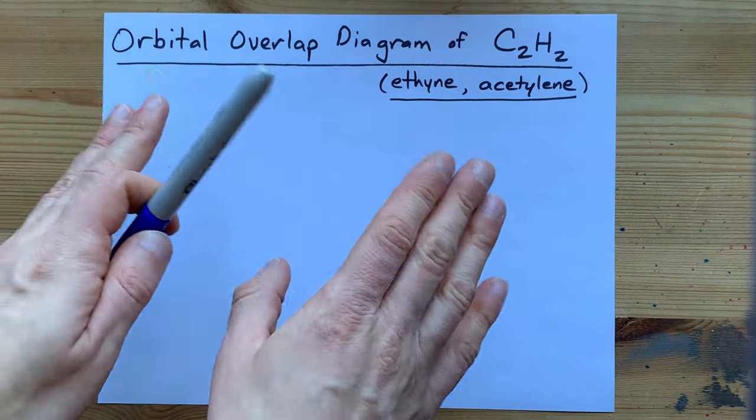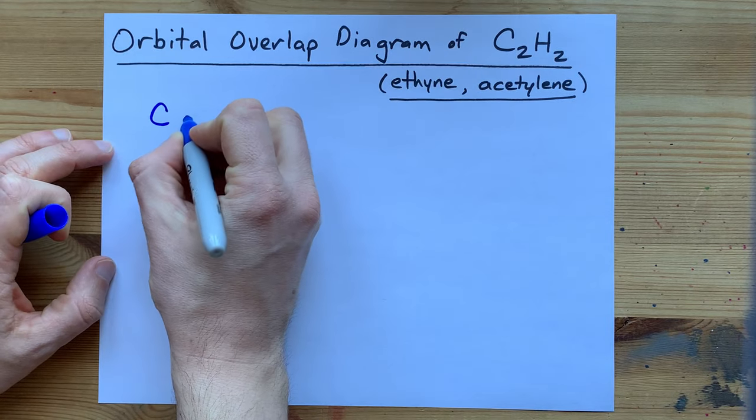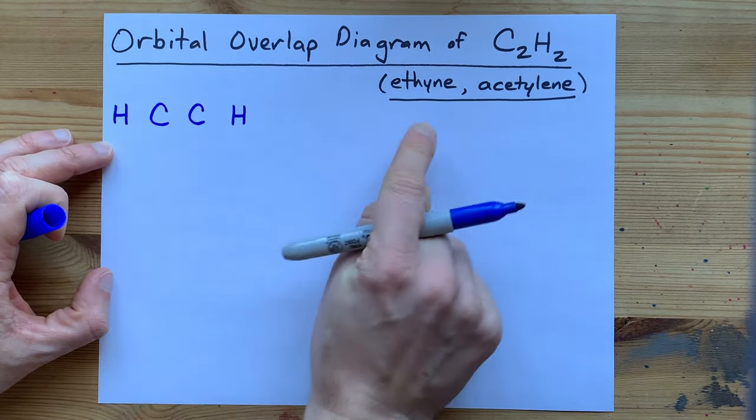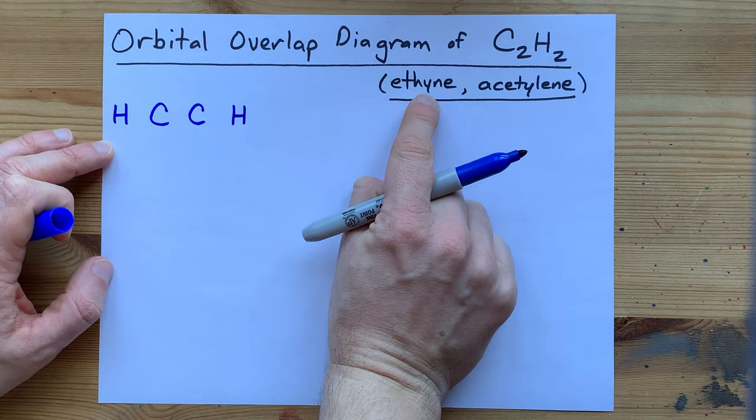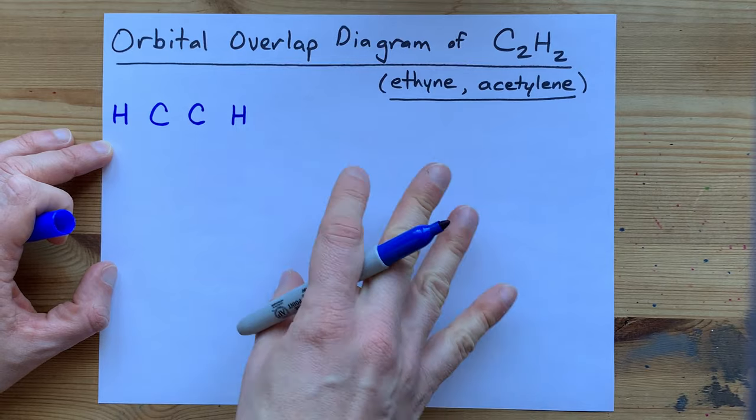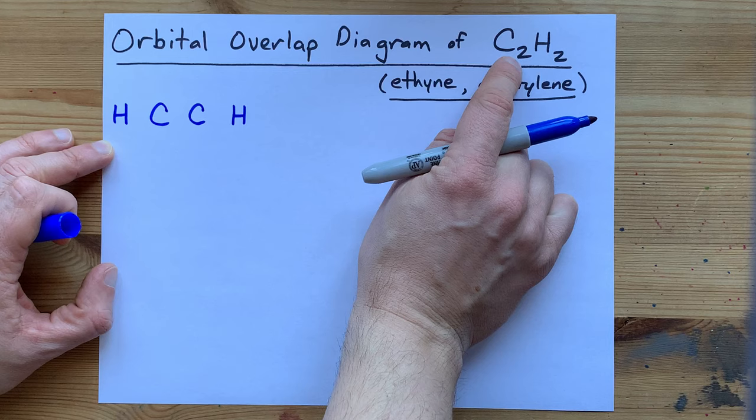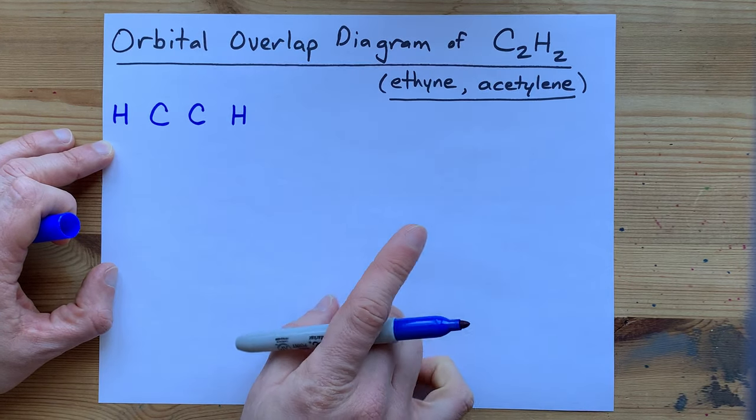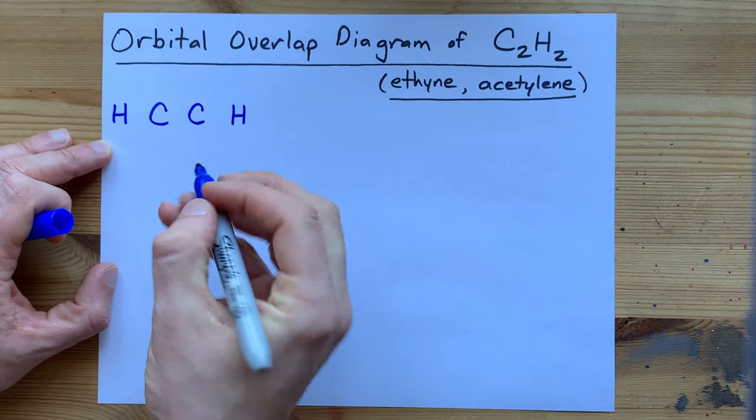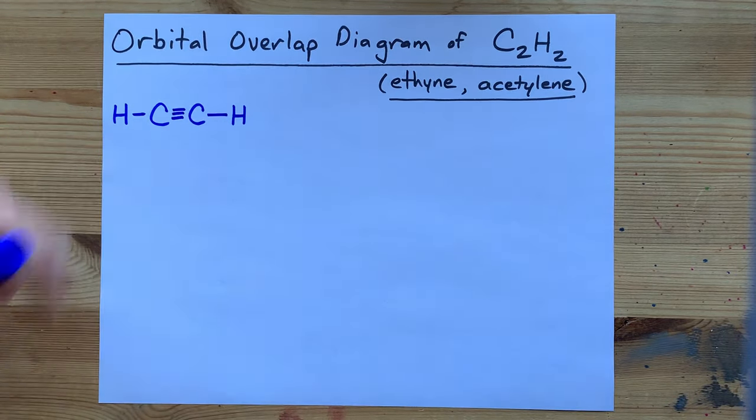Now you may want to draw yourself a Lewis structure so you can visualize what's happening. You have two carbon atoms, you have two hydrogen atoms, one on each side, and the ein here might already tell you that it's a triple bond between the carbons. If it's not, just try drawing a Lewis structure that contains 4x2 plus 1x2, 10 valence electrons that satisfies the octet rule on both carbons. You'll find the only option is to have a triple bond between the two.